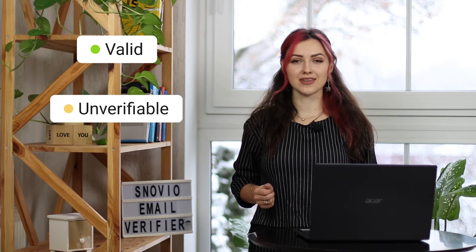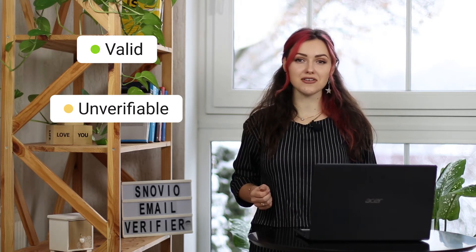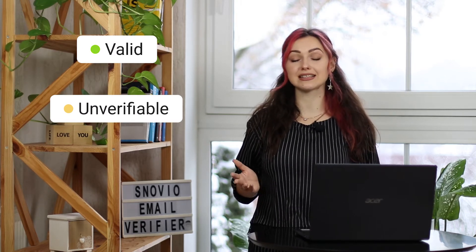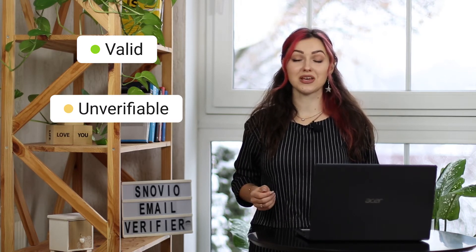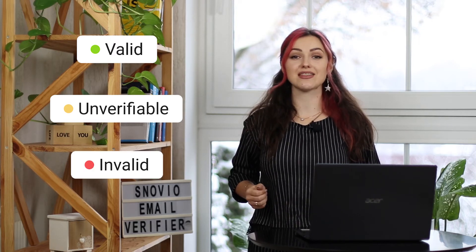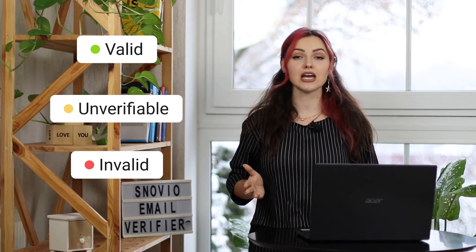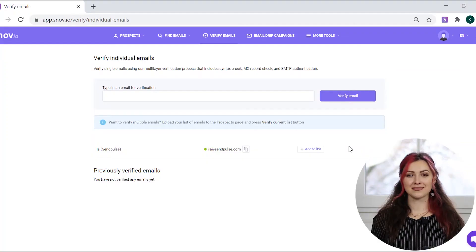A green label means the email is valid. Yellow means the email is unverifiable and likely catch-all — you won't be charged for these emails. A red label shows that the email address is invalid and will result in a bounce.